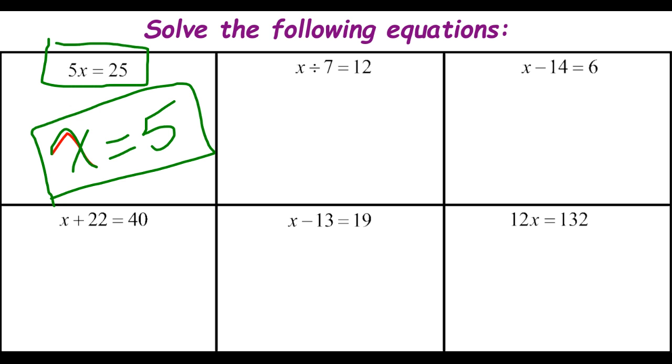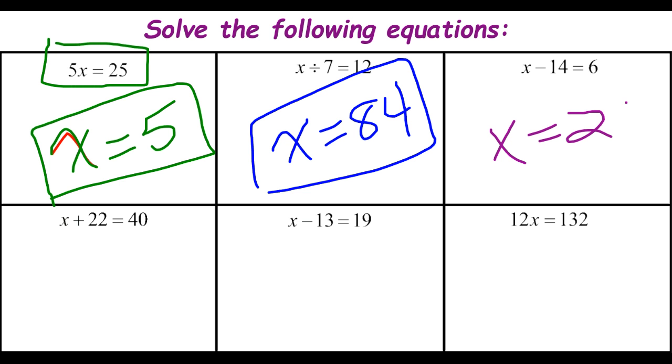When we have x divided by 7 equals 12, moving from left to right, in order to divide a number by 7 to get 12, our original number needs to be 84. We know that from one of our fact families and basic division facts. If we have x minus 14 equals 6, the number that we can take 14 away to get 6 is 20.